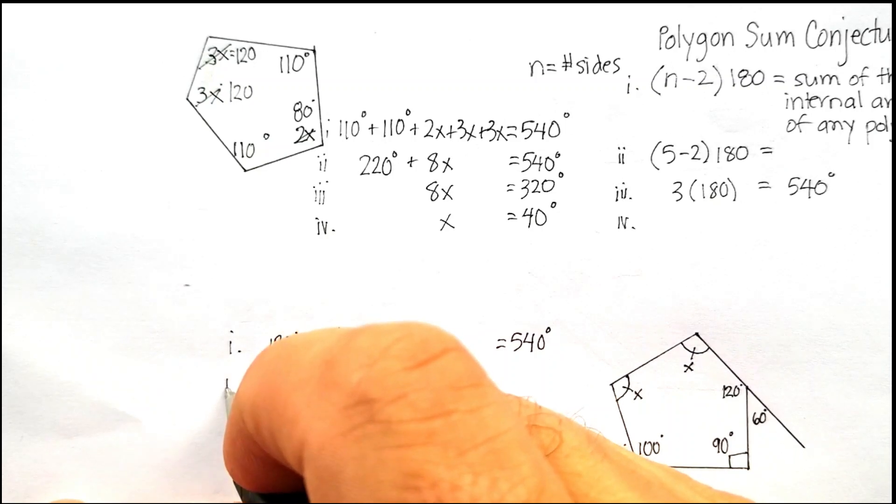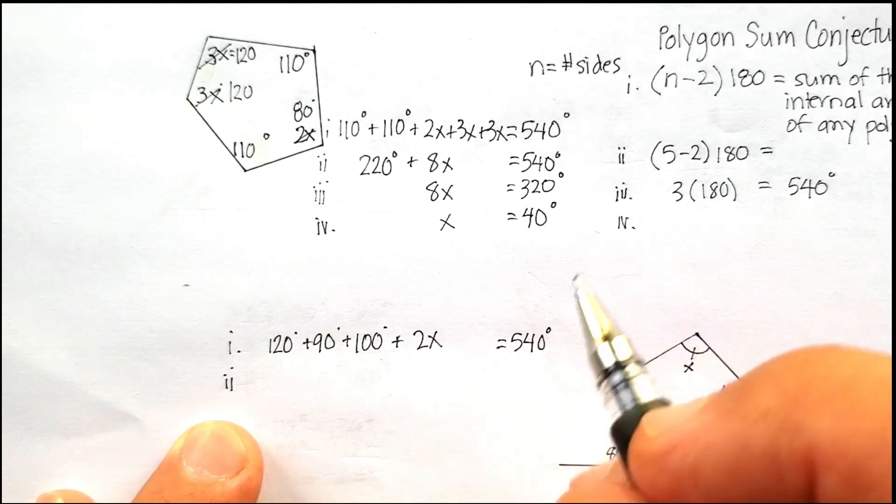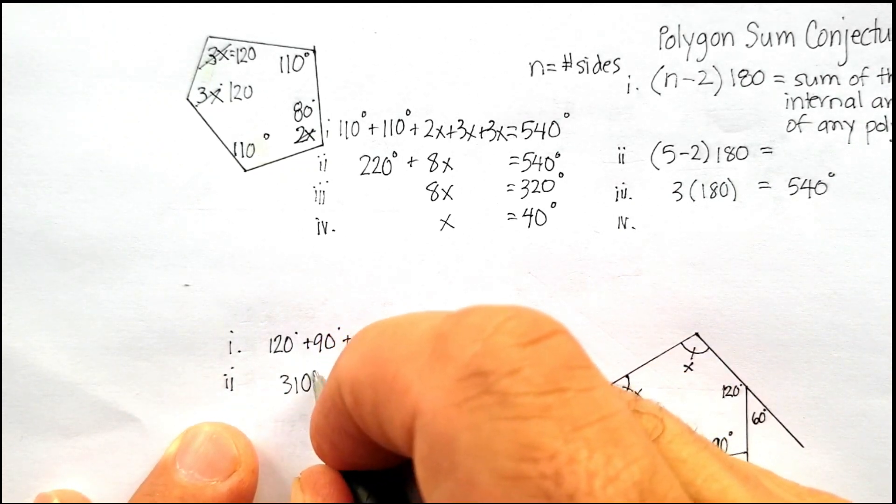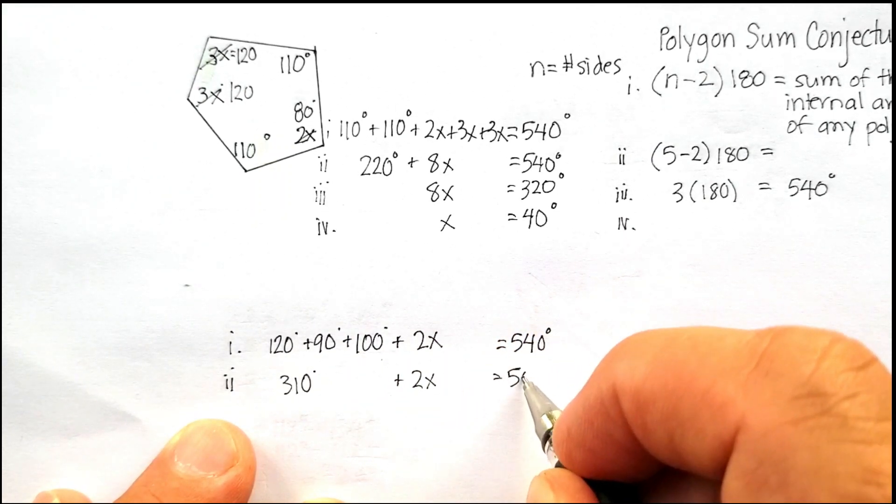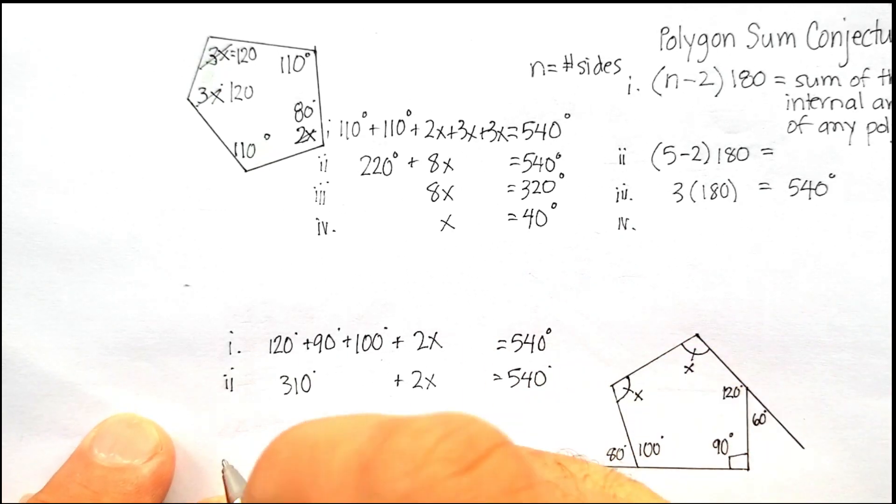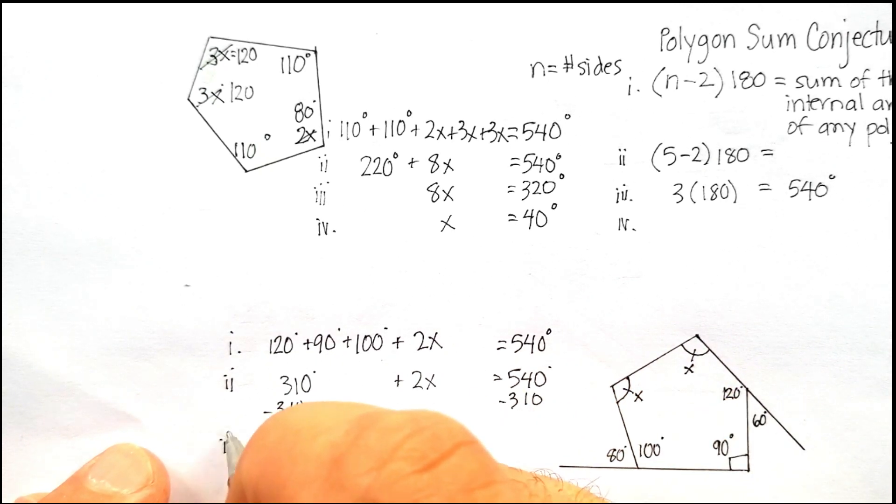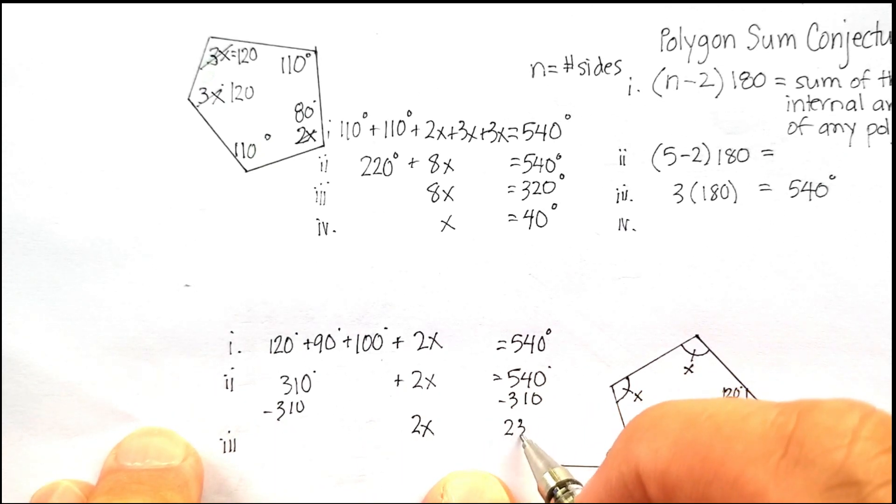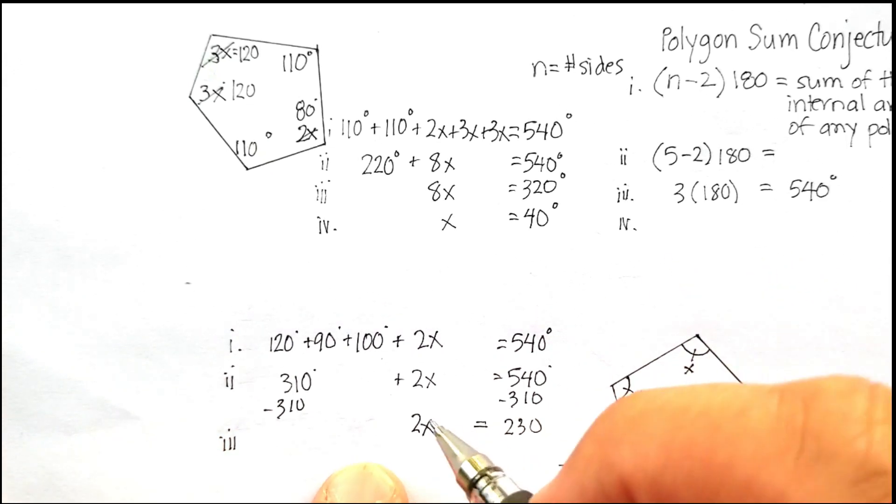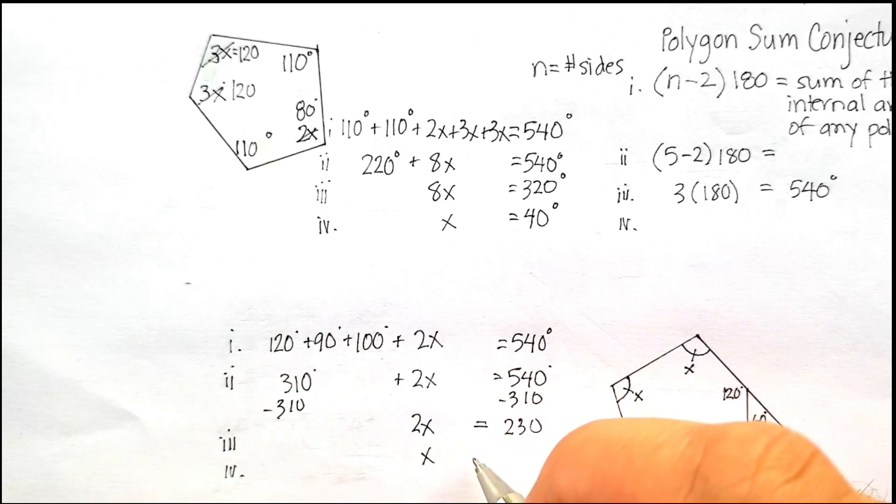And that should equal 540 degrees. Let's gather our like terms now. That's going to be 190, 290, 310. So 310 degrees plus 2x will be equal to 540. Let's subtract 310 from both sides. I'm now going to have 2x will be equal to 230 degrees. I'm going to divide both sides by 2, and I'm going to get x is equal to 115 degrees.